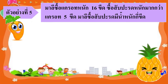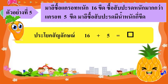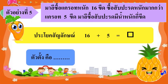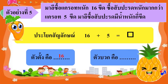จากการวิเคราะห์โจทย์ปัญหาเมื่อสักครู่นะคะ ทำให้เราทราบว่าโจทย์ปัญหาในข้อนี้ใช้วิธีการบวก เราจึงสามารถเขียนเป็นประโยคสัญลักษณ์ได้ดังนี้ ประโยคสัญลักษณ์ 16 บวก 5 เท่ากับเท่าไร จากประโยคสัญลักษณ์นะคะ จำนวนแรกคือตัวตั้ง คือ 16 และจำนวนหลังคือตัวบวก คือ 5 นั่นเอง